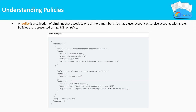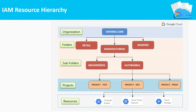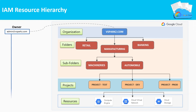We can also add conditions to a policy. A condition can add constraints based on the attributes of the request, resource, or both. With the help of Cloud IAM Resource Hierarchy, you can control the access of a user at each and every level of your GCP organization. For example, admin@vsparks.com is assigned with the owner role at the organizational level, and this owner role is inherited across all levels down to the bottom.